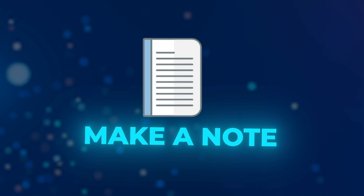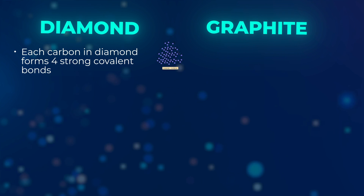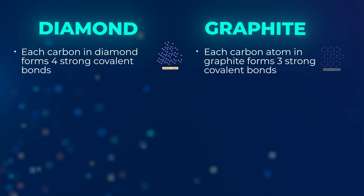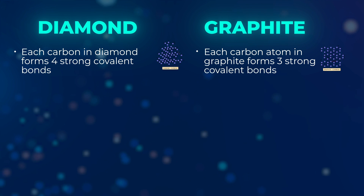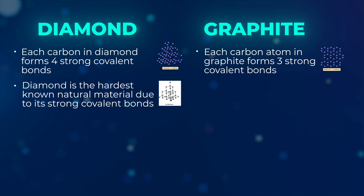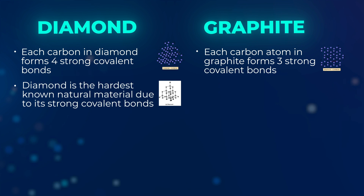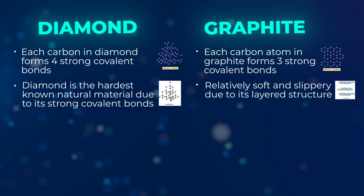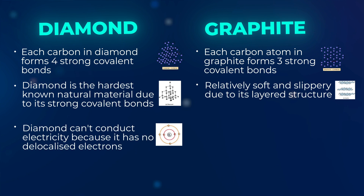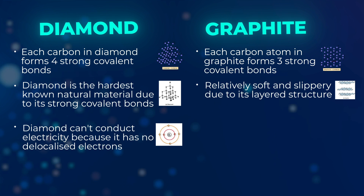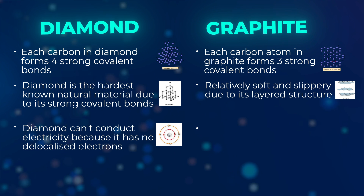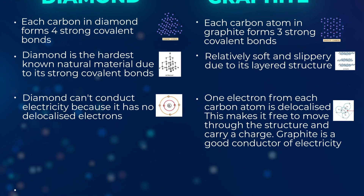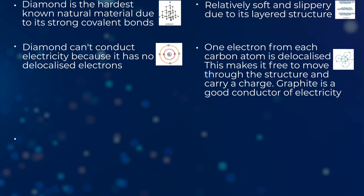Make a note of these points. Each carbon in diamond forms four strong covalent bonds, whereas in graphite each carbon atom forms three strong covalent bonds with three other carbon atoms. In terms of hardness, diamond is the hardest known natural material due to its strong covalent bonds, while graphite is relatively soft and slippery due to its layered structure. For electrical conductivity, diamond can't conduct electricity because it has no delocalised electrons, whereas in graphite one electron from each carbon atom is delocalised, making it free to move through the structure and carry a charge — so graphite is a good conductor of electricity.